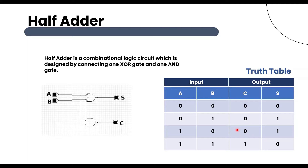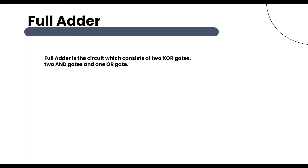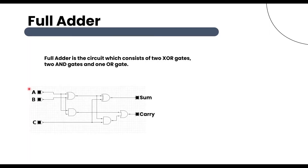A full adder is a circuit which consists of 2 XOR gates, 2 AND gates, and 1 OR gate. The full adder adds 3 inputs and produces 2 outputs. The first inputs are A and B, and the third input is CIN. The output carry is designated as COUT and the normal output is designated as SUM. Now let's see the truth table.